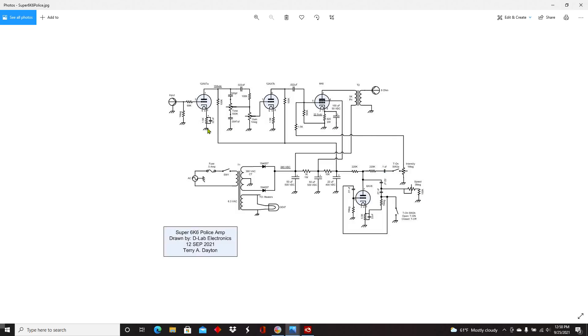So my intensity and speed pots are on the new chassis. Other than that, from here over it is identical to the initial 6K6 amp that I designed. So now I'll cut to the red lines here.